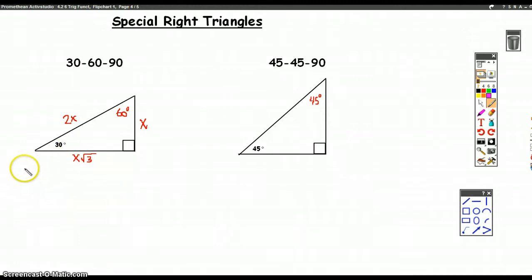So, now that we know the definition of those trig functions, we could, for instance, find the sine of 30 degrees. So the sine of 30 degrees is X divided by 2X, because it's, by definition, opposite over hypotenuse.